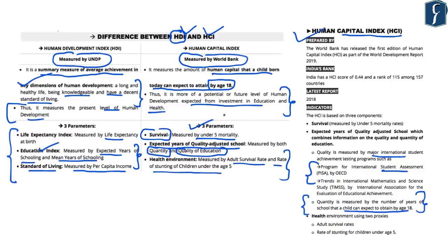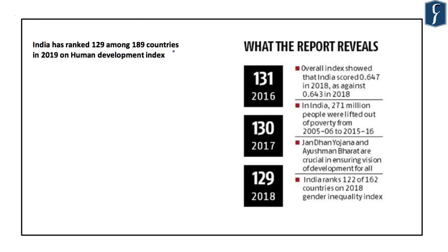These are key points of comparison between the HDI and HCI. According to the recent index, India has a human capital score of about 0.44 and ranks as low as 115 among 157 countries. The global human capital score is only about 0.56. Regarding the present Human Development Report, India has ranked at 129 amongst 189 countries in 2019 on the Human Development Index.